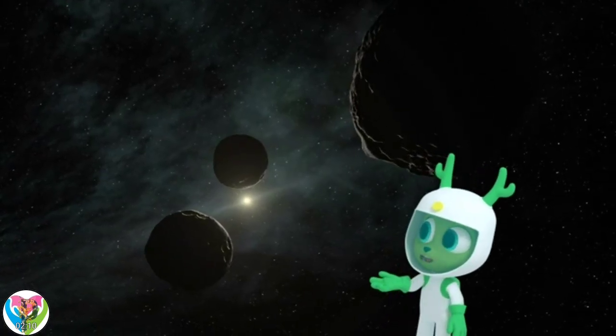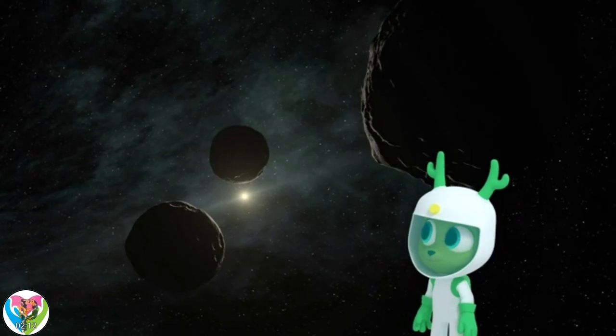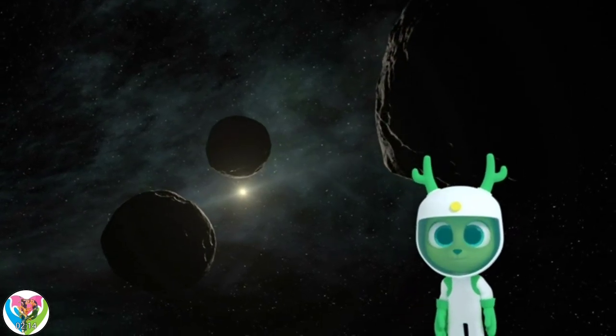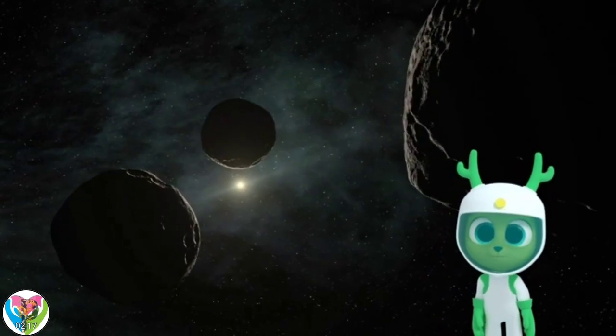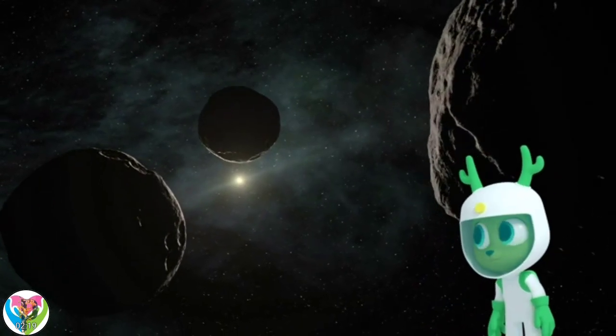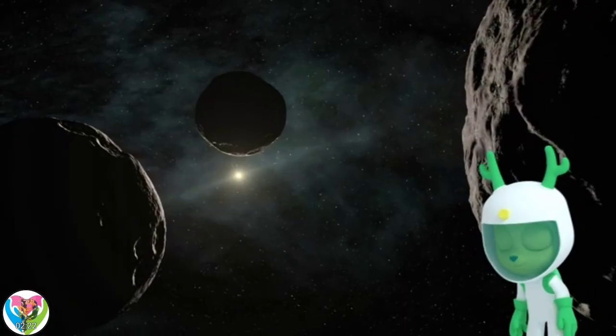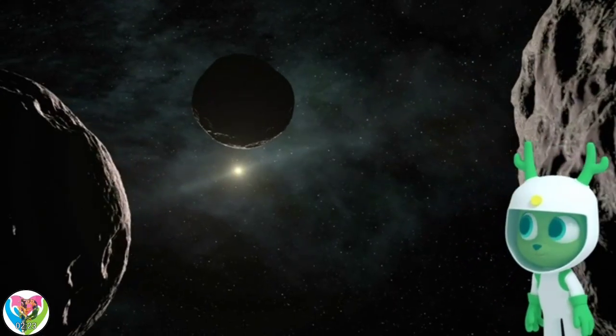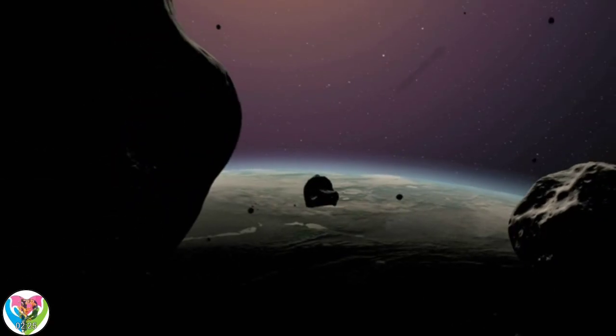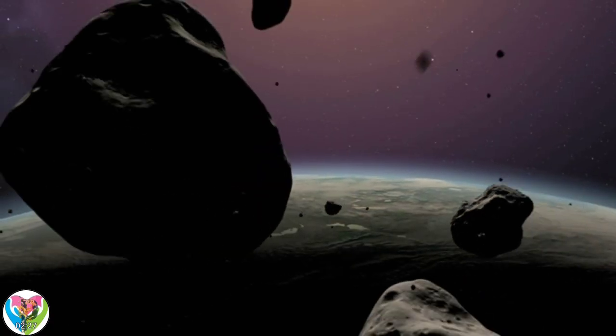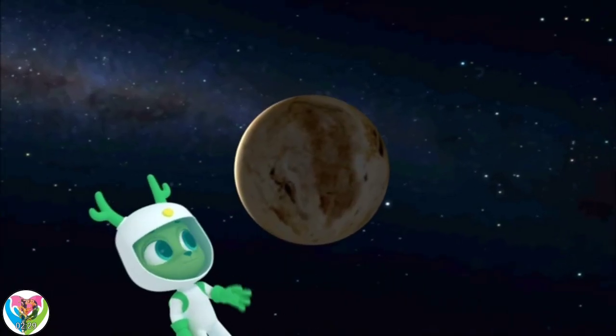Look at those asteroids. This is the main difference between the other eight planets and the dwarf planets. The dwarf planets haven't cleared away the space debris around them. Debris is space objects like asteroids, ice, and rocks. Hey, that's Pluto!